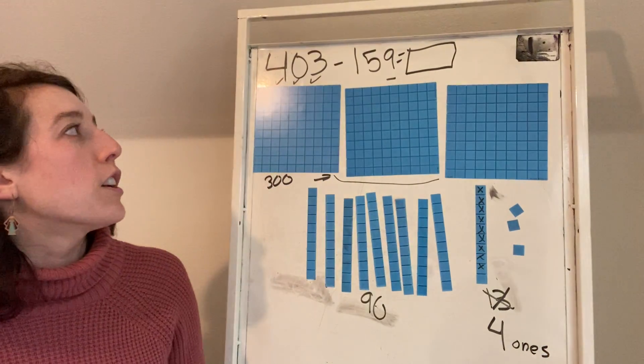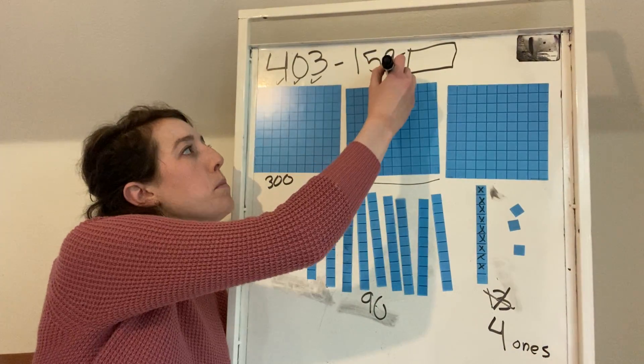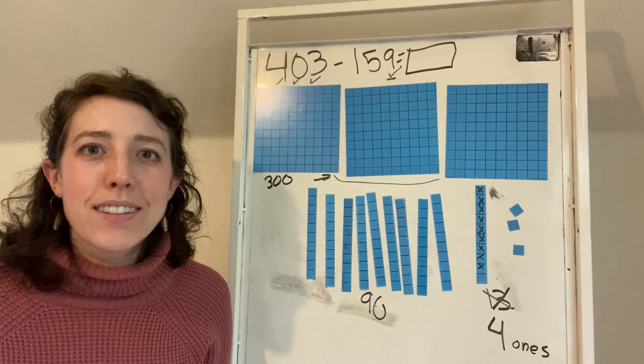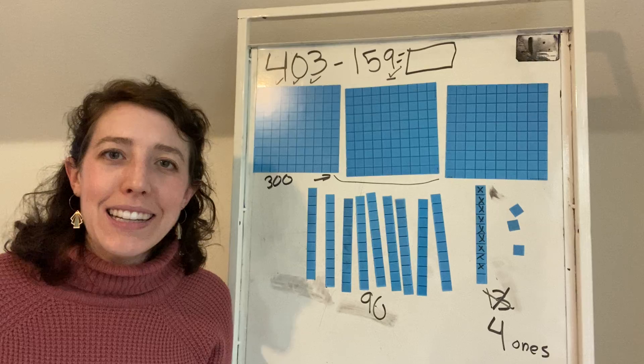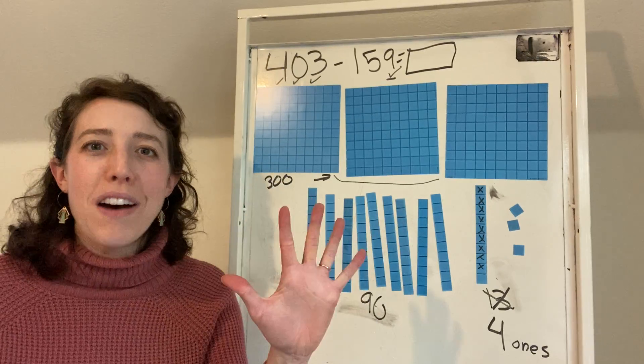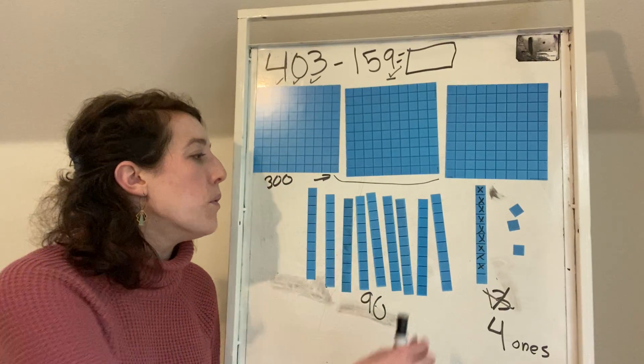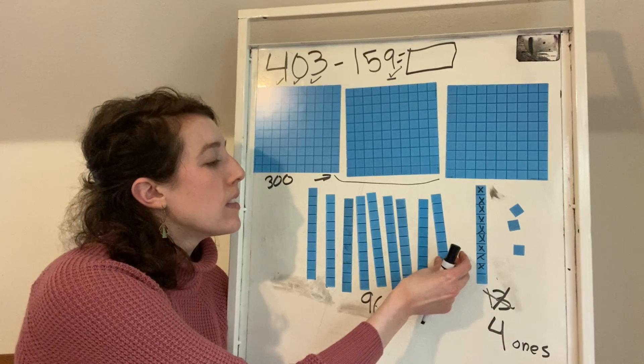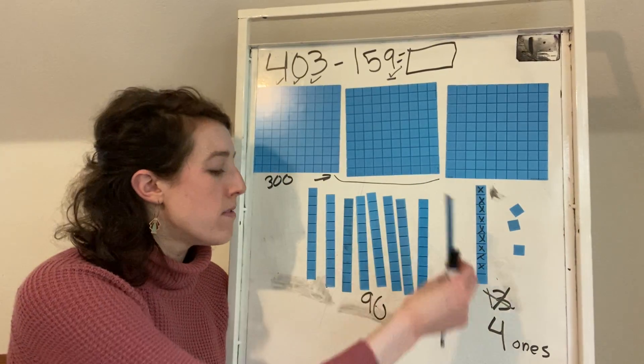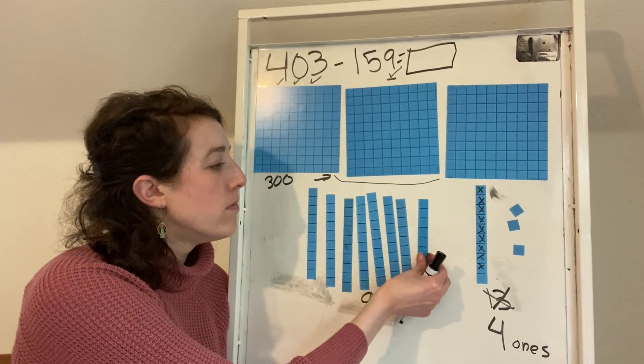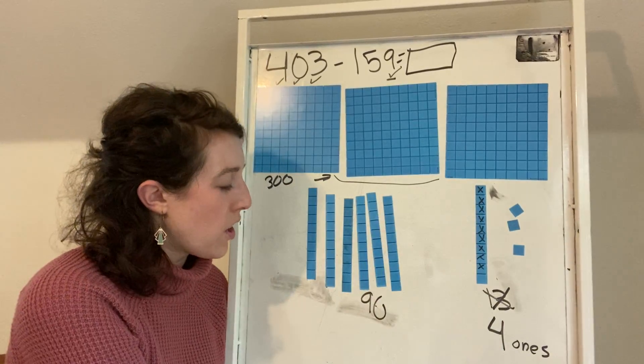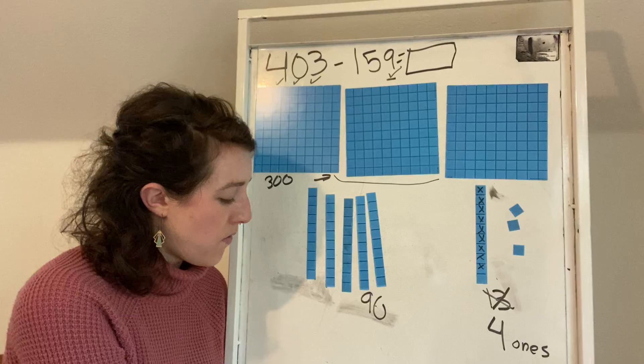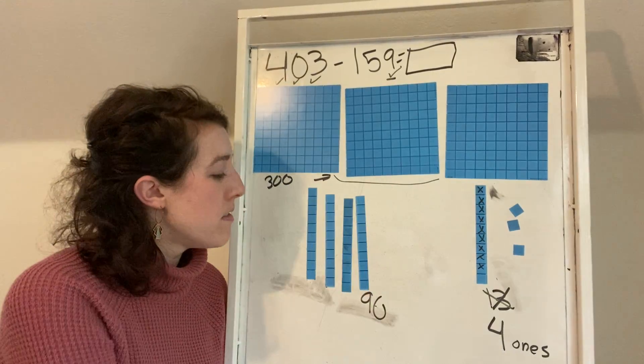So now let's look over here. I subtracted by nine. Next, let's look at my tens place. Next, I need to subtract five tens. Count with me. I can even totally move these off. 10, 20, 30, 40, 50.